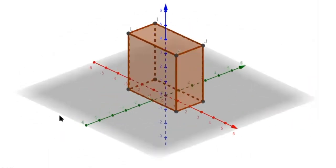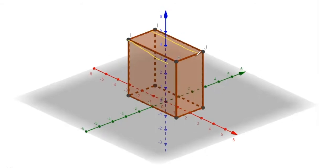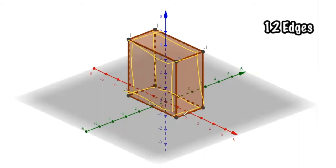How many edges does the rectangular prism have? From the definition of edges, it's a line segment where two faces intersect. If we count, we get one through twelve. So the rectangular prism has twelve edges and six faces.